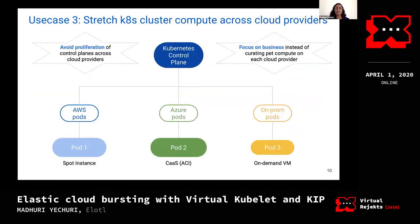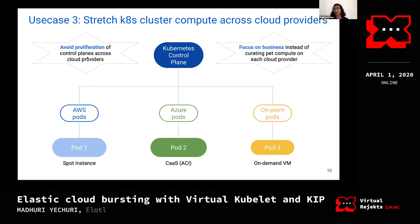The third use case is the ability to stretch your Kubernetes cluster compute across multiple cloud providers. AWS, Azure, and on-premise data centers might have compute at various price points. It would be nice to schedule pods that are not super business-critical — like test pods — on a cloud provider where the current price is lower, and your most critical pods on a cloud provider where you get the best SLA. It would be super burdensome on DevOps teams to maintain a proliferation of control planes to manage these various pods across various cloud providers.